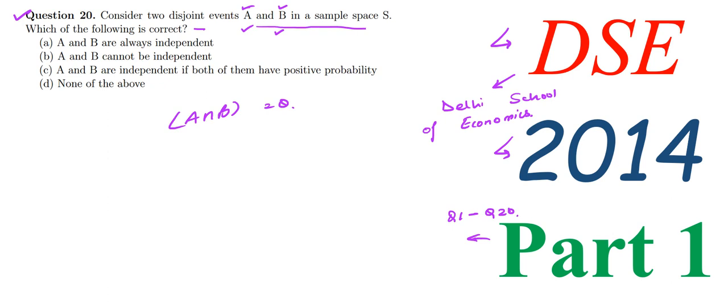In our first option it is: A and B are always independent. The second option is: A and B cannot be independent — exactly the vice versa, the opposite of the first option. Now, A and B are independent if both of them have positive probability and neither is zero.